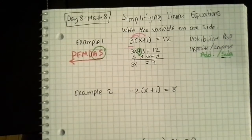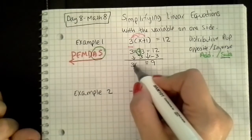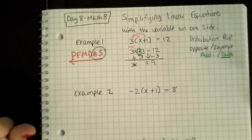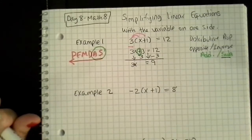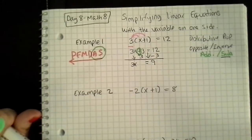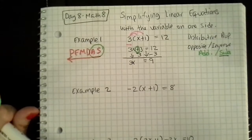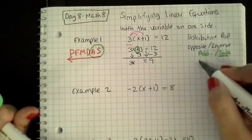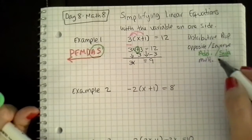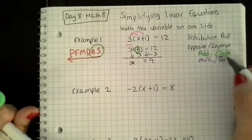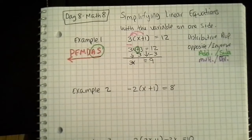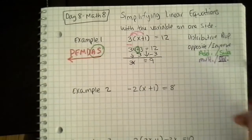The next step I use is my multiplication or division, because any time I have a number in front of a variable, that really tells me that I'm multiplying. So I am going to use multiplication or division. And the inverse operation of multiplication is division, so I'm going to go ahead and choose division.